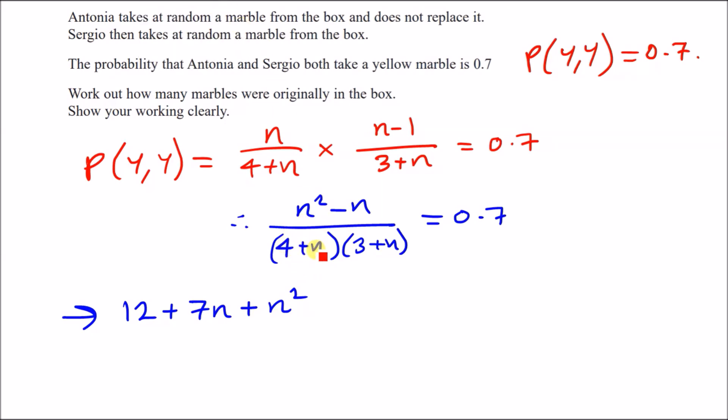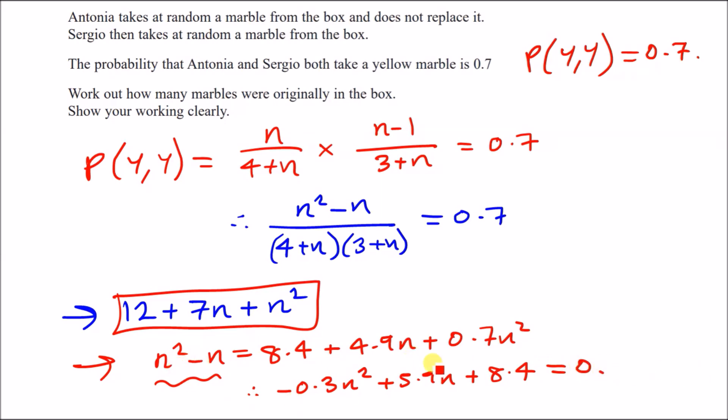Now, dealing with the bottom half here, so let's deal with the bottom half for a second. So expanding the bracket, you're going to have four times three, which is 12, plus four times N is four N. N times three is three N, and so that gives you a total of seven N, plus N times N is N squared. Alright, so that's just the bottom half here. Now what we're going to do, we're going to multiply this across here, so clear the fraction. So times in the denominator across to 0.7, we're going to have a total equation of N squared minus N equals 0.7 times this lot. Okay, so 0.7 times 12 is 8.4 plus 0.7 times 7N, that's going to give us 4.9N, plus 0.7N squared.